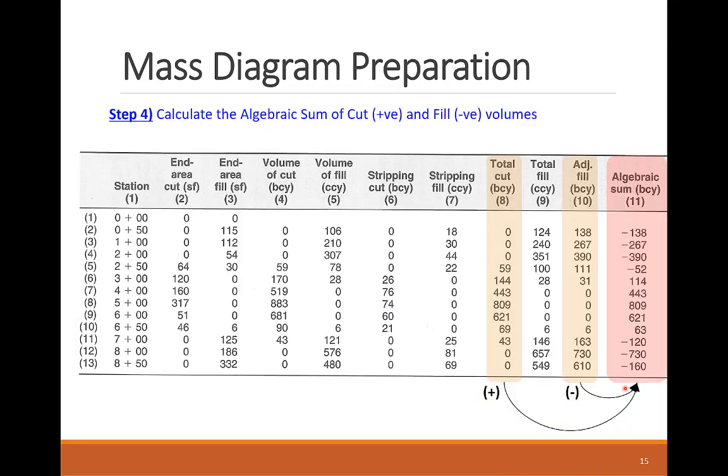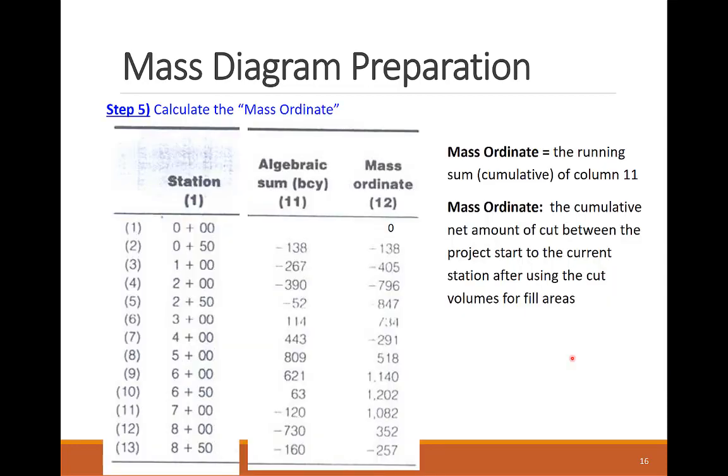Almost there. The next step is to get the algebraic sum of the cut and fill quantities of each segment by subtracting the fill volume from the cut volume. As such, we consider cut volumes positive and fill volumes negative. Finally, we calculate the mass ordinate at each station at the end of each segment. The mass ordinate is another name for cumulative sum where we add up the cut-fill volume algebraic sums from the start to the end of the project.